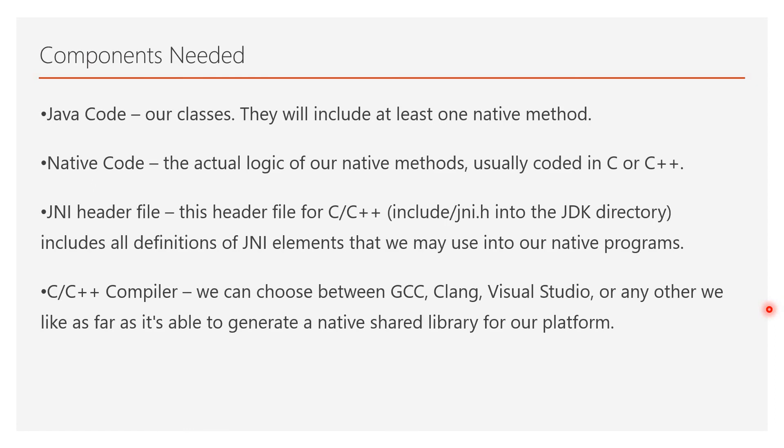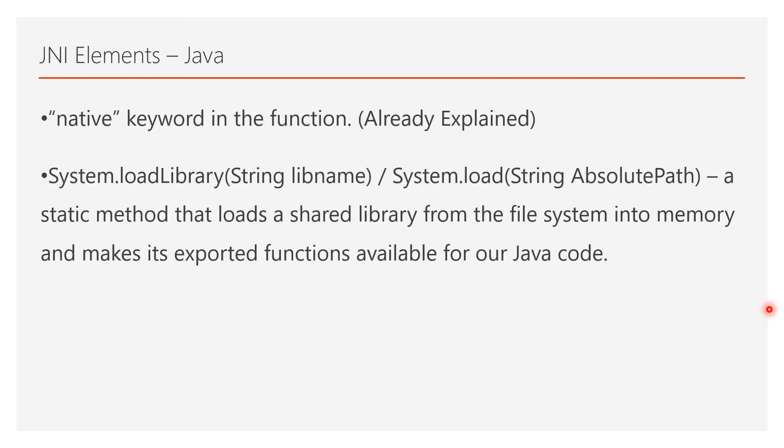A table with pointers in memory to the implementation of all native methods is constructed so they can be properly called by our Java code. Now, what are all the components needed? We need: Java code, native code, a JNI header file, and a C or C++ compiler. The Java code consists of your classes including at least one native method. The native code is the actual logic written in C or C++. The JNI header file — jni.h — must be included in the C/C++ file. For the compiler, we can choose GCC, Clang, Visual Studio, or others; GCC is most comfortable for our case.